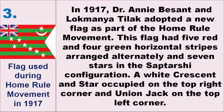In the third phase, in 1917, Dr. Annie Besant and Lokmanya Tilak adopted a new flag as part of the Home Rule movement. This flag had five red and four green horizontal strips arranged alternately and seven stars in the Saptarshi configuration. A white crescent and star occupied the top right corner and a Union Jack on the top left corner.